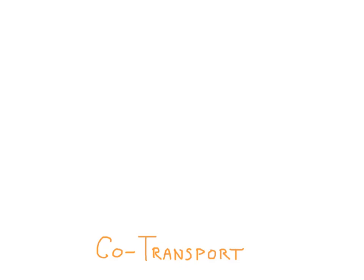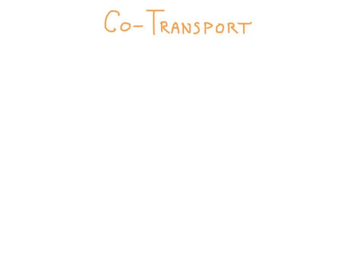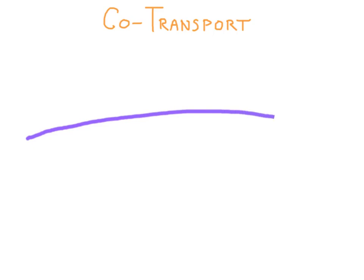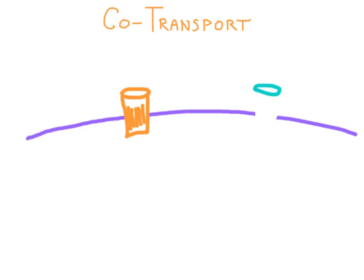Understanding co-transport is probably the most challenging, so let's get started. This purple line represents the phospholipid bilayer. In co-transport, we need two channels for the passage of ions and molecules. Let's put some kind of active transport protein in the membrane here, and some kind of channel protein over here.